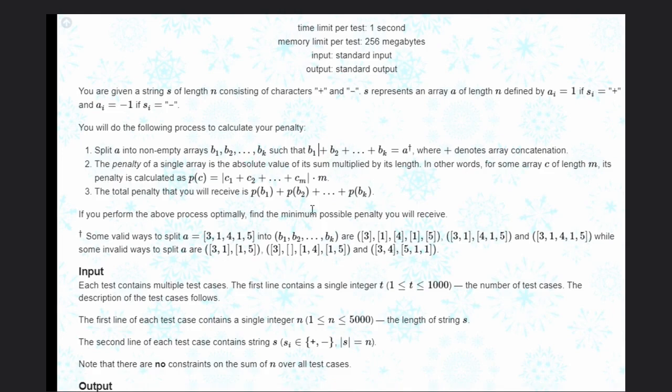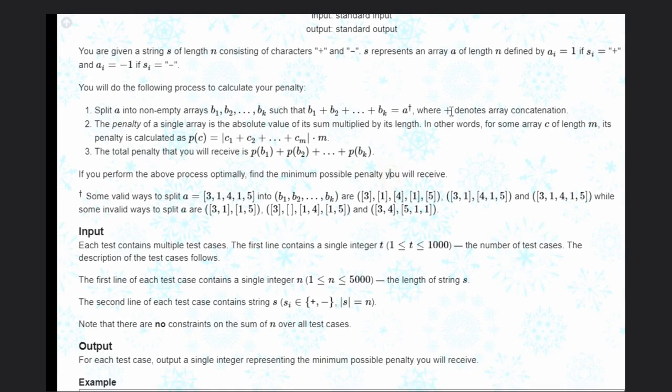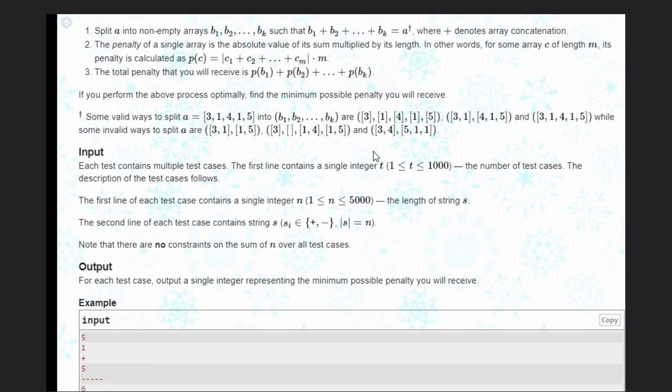We need to split a into subarrays, number of subarrays, and then we will do the concatenation so that the final array can be generated. How penalty will be calculated: we need to sum the subarray and multiply with the length of it, then sum all the penalties you calculated from all the subarrays possible.